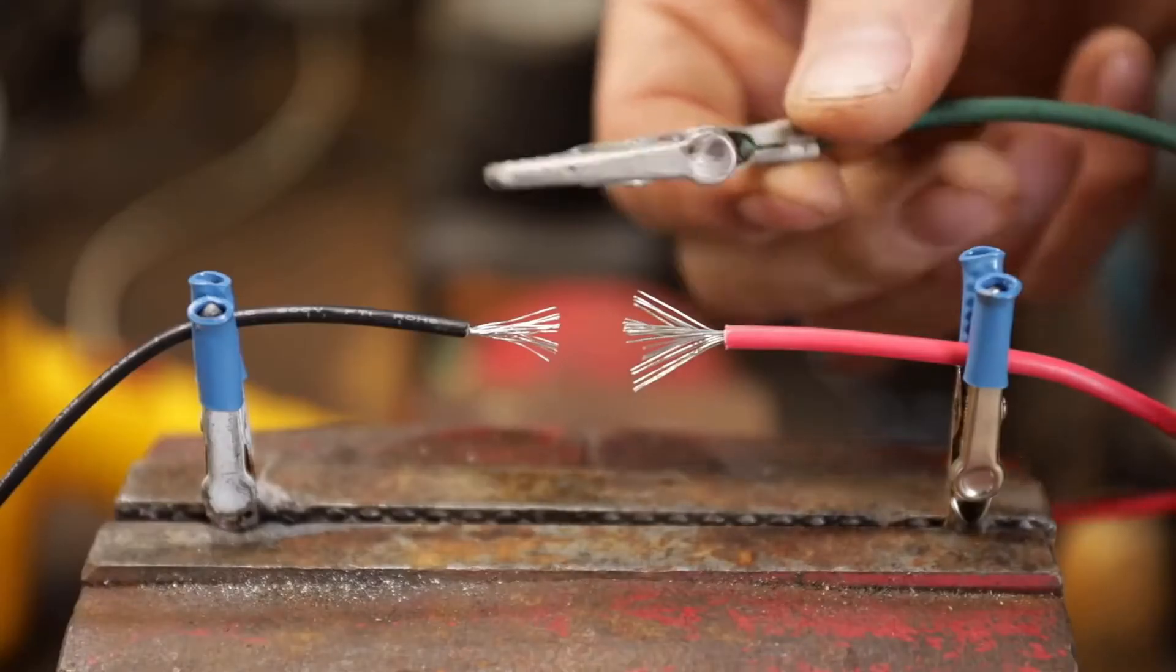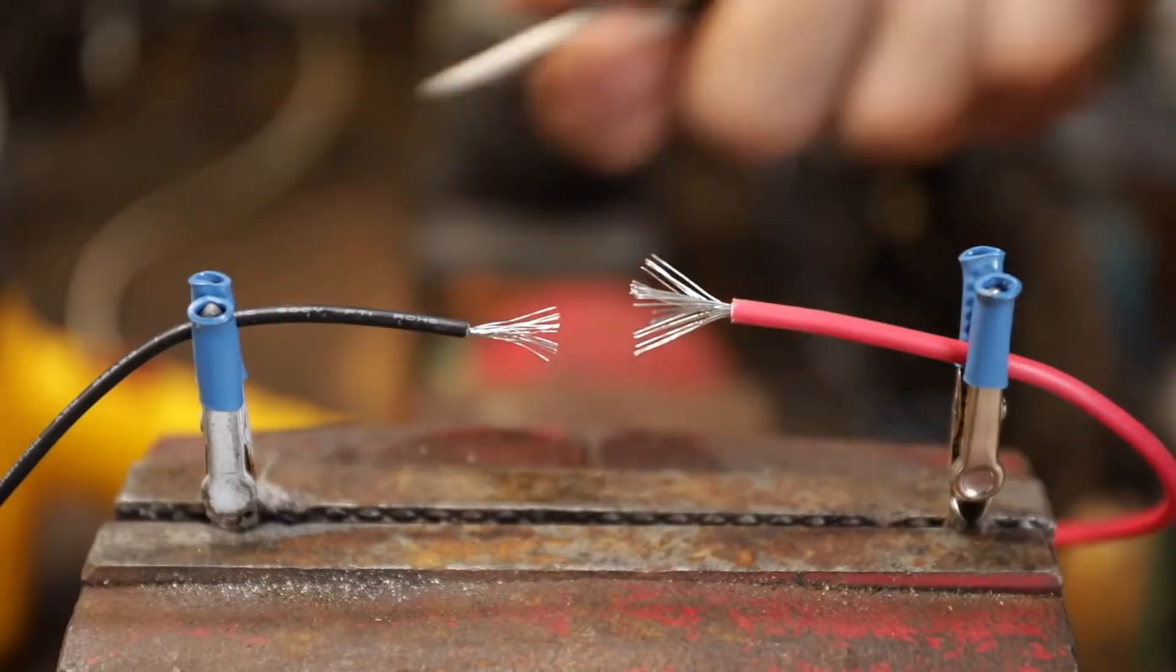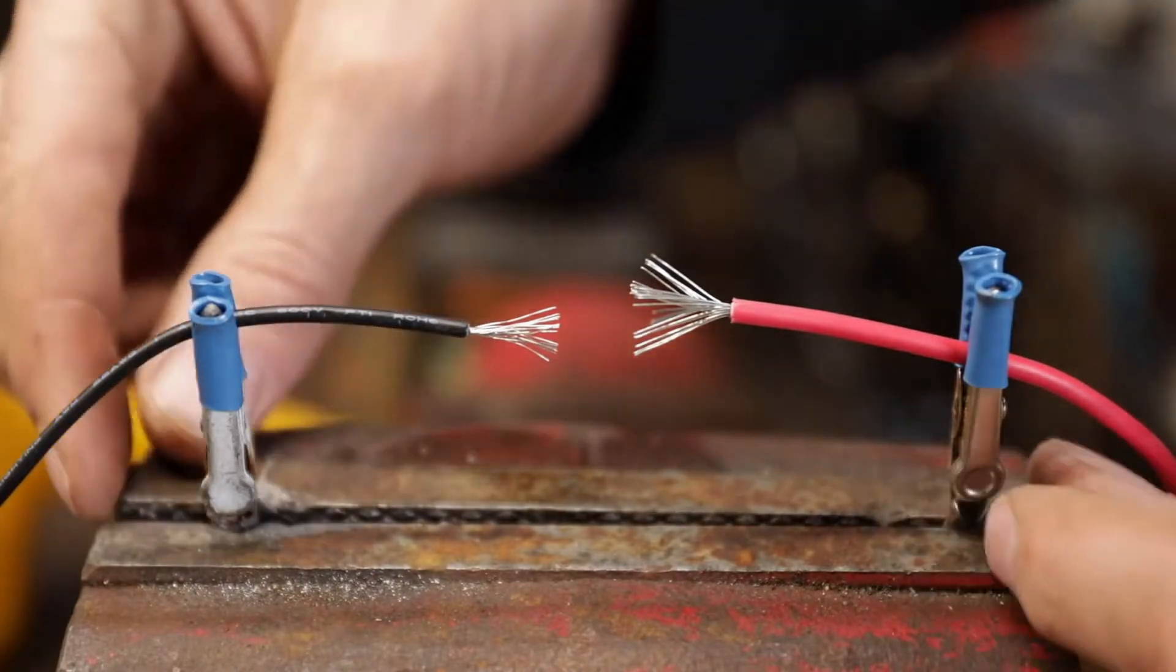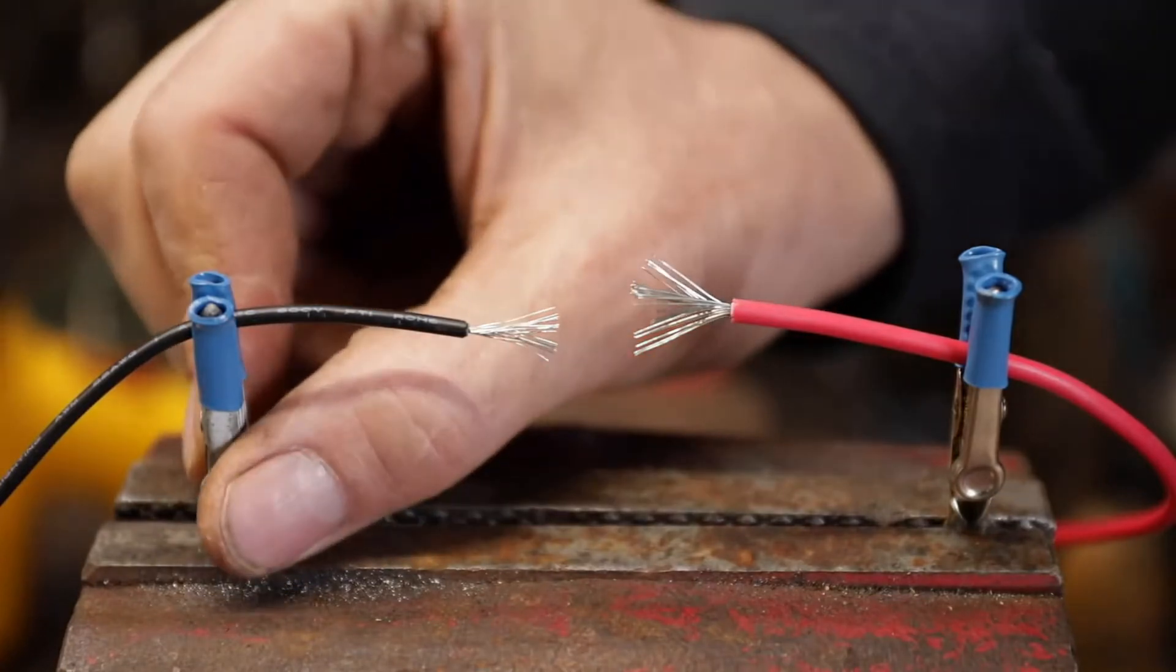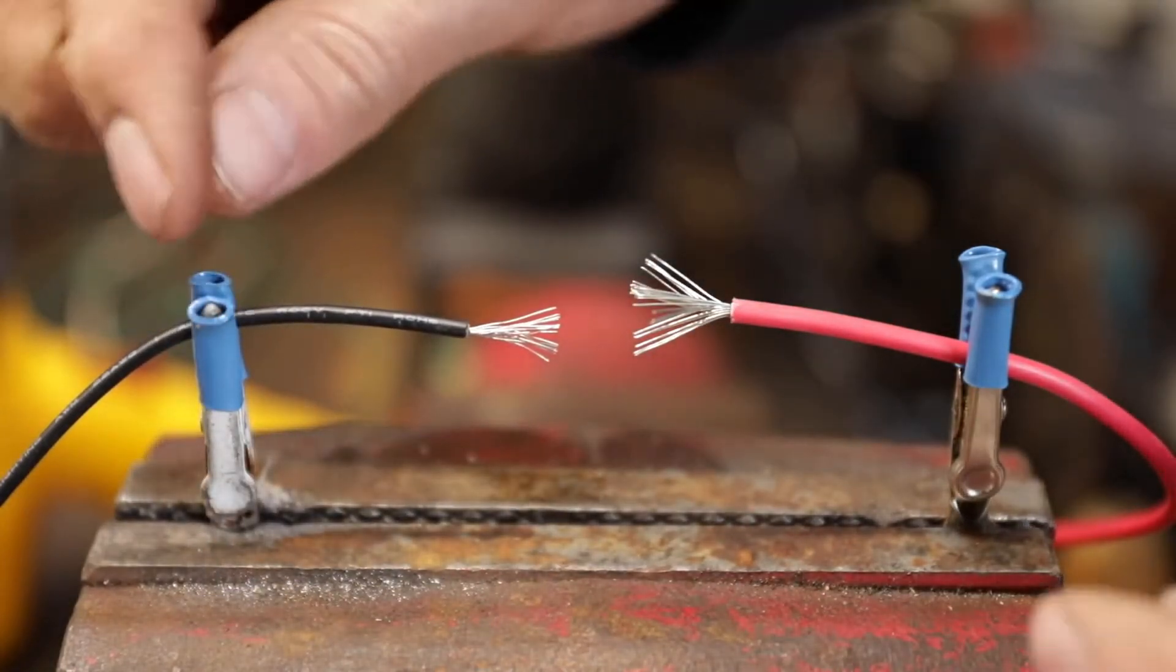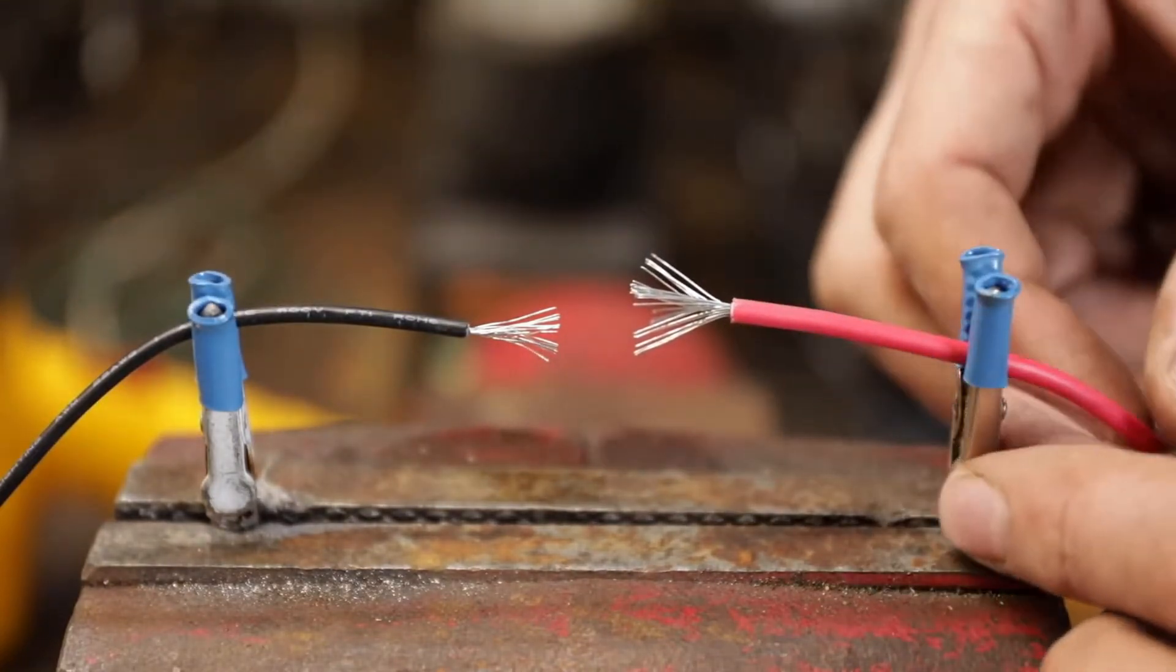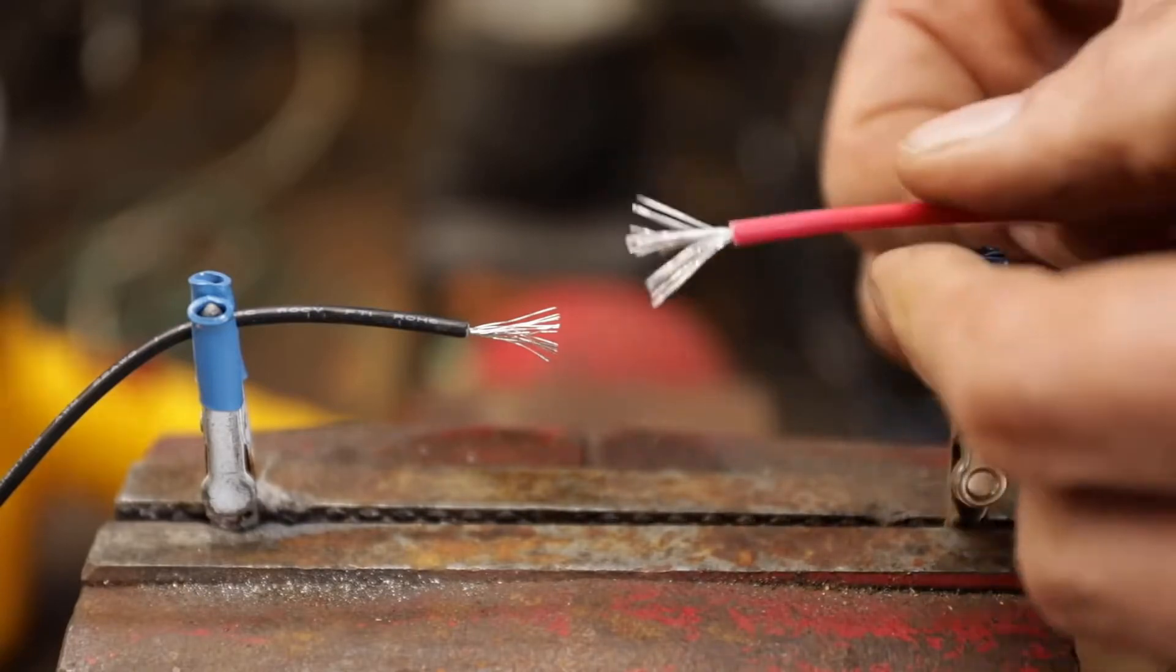Do yourself a favor and get a couple of these alligator clips. You don't have to have those fancy stands. Take two alligator clips and clamp them in your vice like this. Some of these clips have a pretty tight spring, so take some shrink tubing and melt it on there so they won't mess up your wire. This is going to hold things securely and you're going to get a whole lot better job.